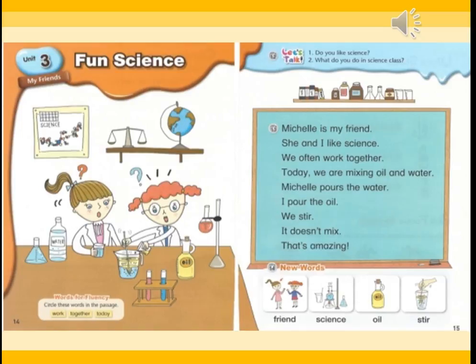Michelle pours the water. Michelle은 물을 붓고요. I pour the oil. 나는 기름을 부어요. We stir. 우리는 stir, 젓습니다 — 이렇게 휘휘 젓는 걸 얘기하는 거예요. It doesn't mix. 그건 섞이지가 않아요. That's amazing! 정말 놀랍네요.